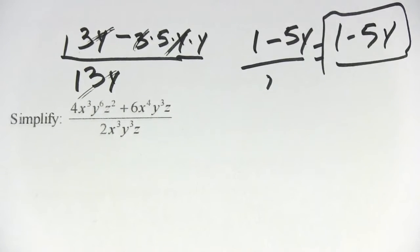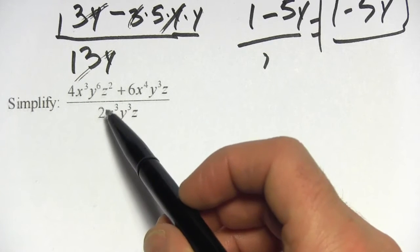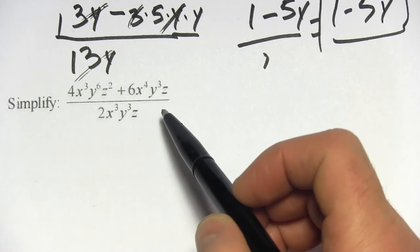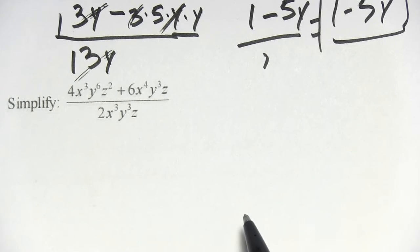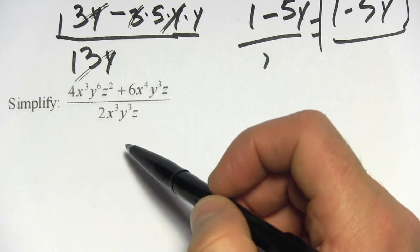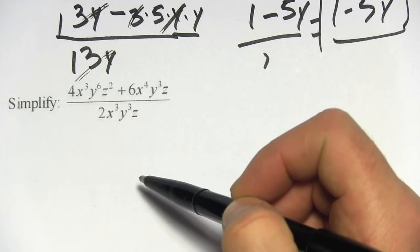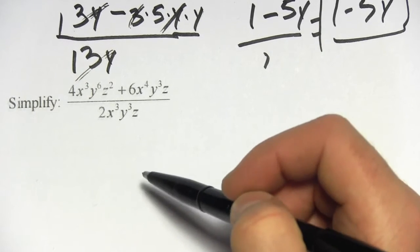Alright, let's try that same kind of thing with a slightly more complicated problem. So here we have 4x to the 3rd, y to the 6th, z to the 2nd, plus 6x to the 4th, y to the 3rd, z, over 2x to the 3rd, y to the 3rd, z. The way to do this is simply to work on the number first and then the x's and then the y's and so forth and cancel what you can on the top and the bottom.